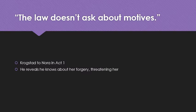I've chosen as the first example a line from Act One that Krogstad speaks to Nora: 'The law doesn't ask about motives.' The context is their first major conversation where he reveals he knows about her forging her father's signature on the loan application — threatening her to convince Torvald to let him stay at the bank, or he will reveal the secret.